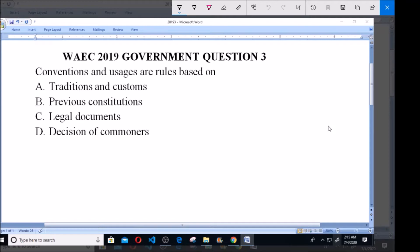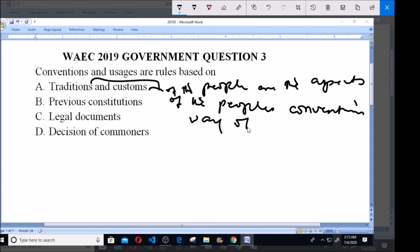So we say that traditions and customs are actually the aspects of the people's conventions - their way of life, how they live, how they settle, how they eat, everything concerning them is under their traditions.